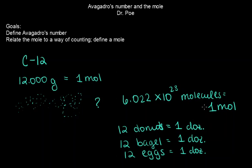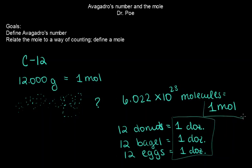And that's a really important concept. Just like 12 donuts has a different number of calories than 12 bagels or 12 eggs, but we can relate them all together because they're a dozen — we're going to relate different molecules and chemicals together based on the mole. Because the mole is standard, just like a dozen is standard. It doesn't matter what you have a dozen of, there's 12 of them. This is how we're going to relate two different chemicals to each other in a chemical equation — it's our way of counting, and that's why it's so important for chemistry.